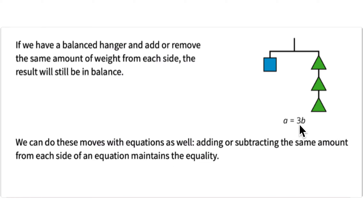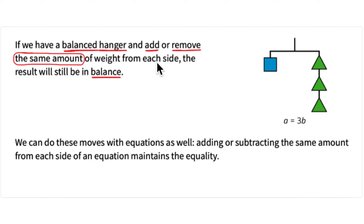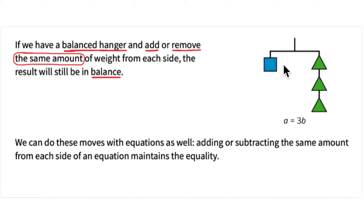A balanced hanger can have the same amount added or removed from each side and it will remain balanced. We start balanced and end balanced, but it's simpler now — we've found a solution: A equals three B. In an equation, we can add or subtract the same value from each side and keep the equation balanced, maintaining equality.